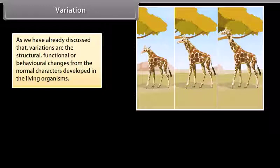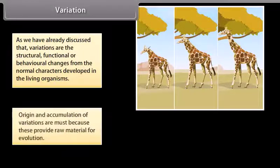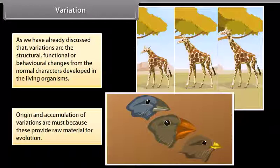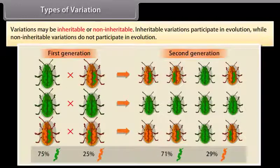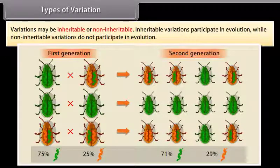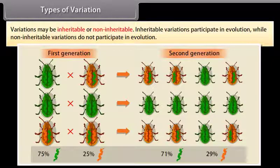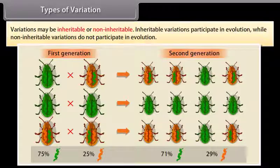Variation: As we have already discussed, variations are the structural, functional, or behavioral changes from the normal characters developed in living organisms. Origin and accumulation of variations are a must because these provide raw material for evolution. Variations may be inheritable or non-inheritable. Inheritable variations participate in evolution, while non-inheritable variations do not participate in evolution.